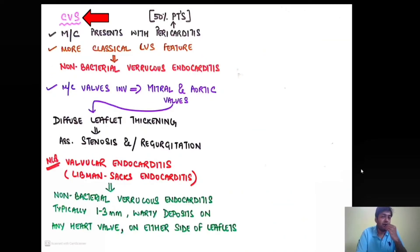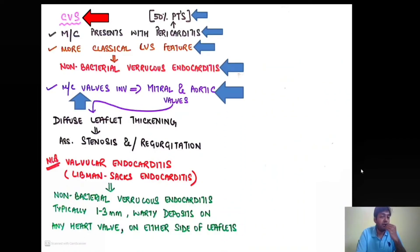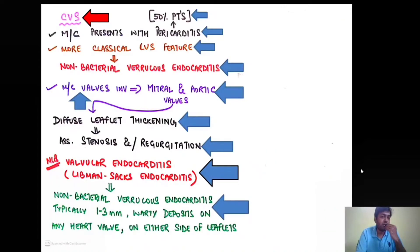At the level of the cardiovascular system, the most common symptom in more than 50% of patients presenting with CVS symptoms is pericarditis. The more classical and specific CVS feature of SLE is non-bacterial verrucous endocarditis. The most common heart valves involved are the mitral and the aortic valves. There is diffuse leaflet thickening associated with stenosis and regurgitation.